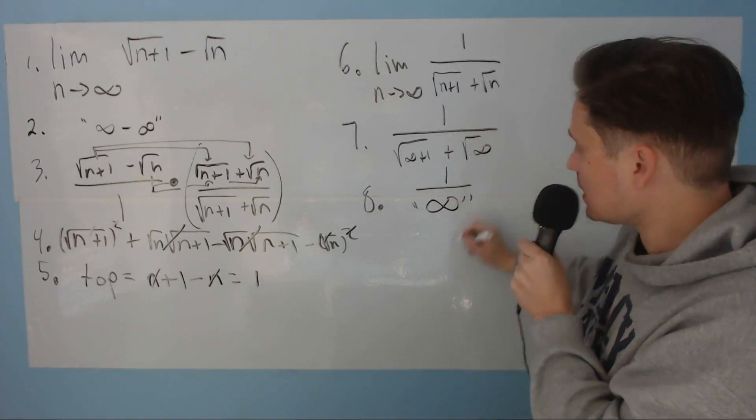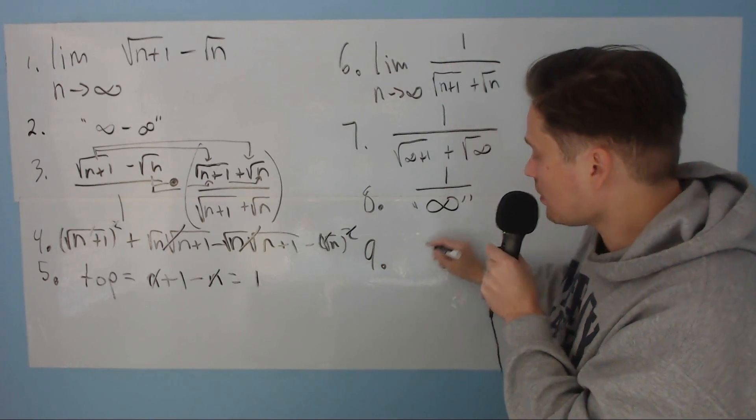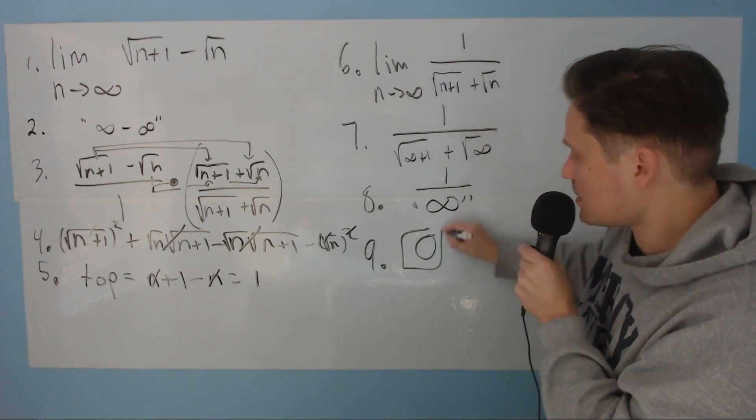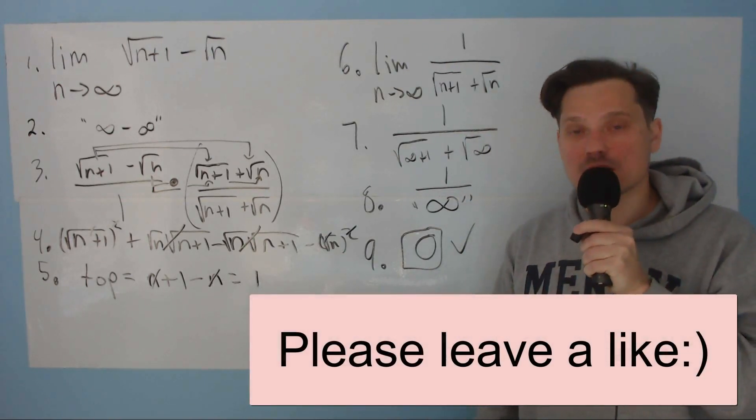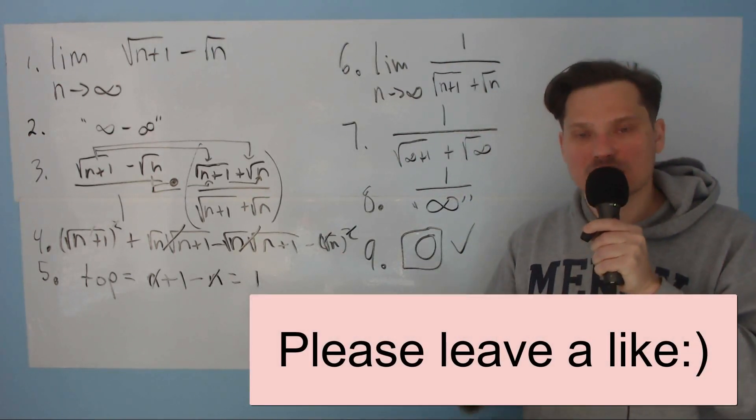And the 1 over infinity, so to speak, in the long run becomes 0. And this is the value of the limit. Thank you so much for watching. I hope it's been helpful. I've shown you, I think, a reasonable amount of detail here. I'll see you in another video.